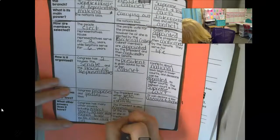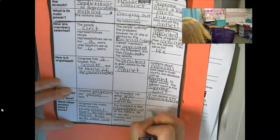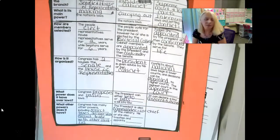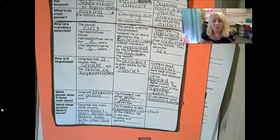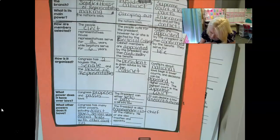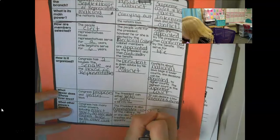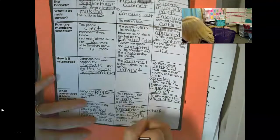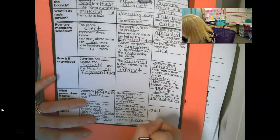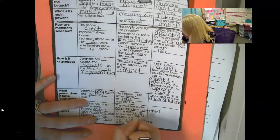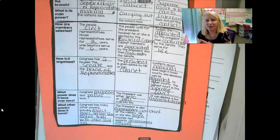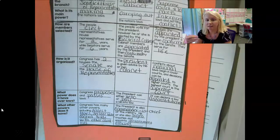The president is also the commander-in-chief — I bet you have heard of that — meaning they are the head person of the military. He or she also signs treaties and appoints government officials. Signing treaties would be like making agreements with other countries where they say we're going to do these things for each other, and that's a treaty. The president would sign that treaty.